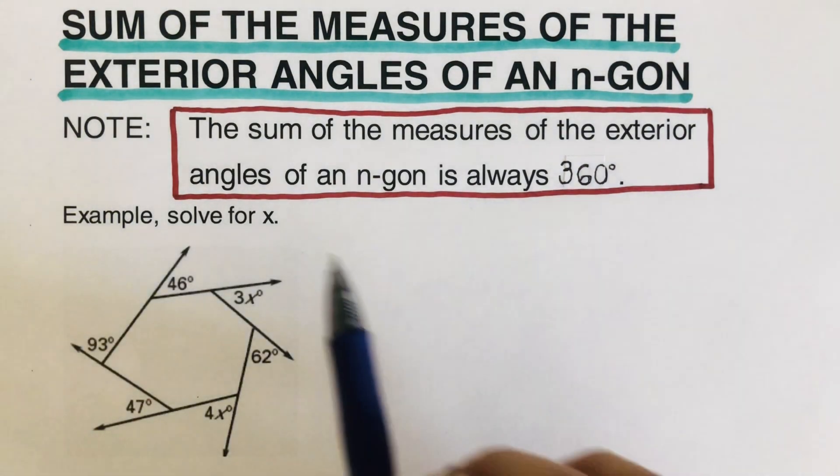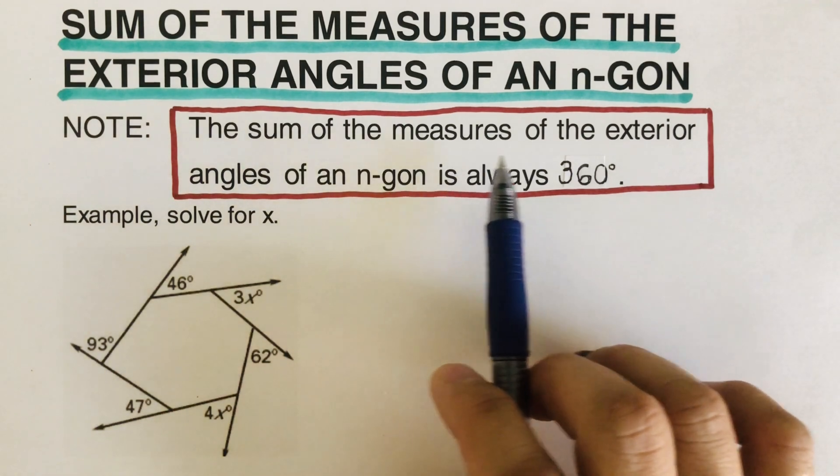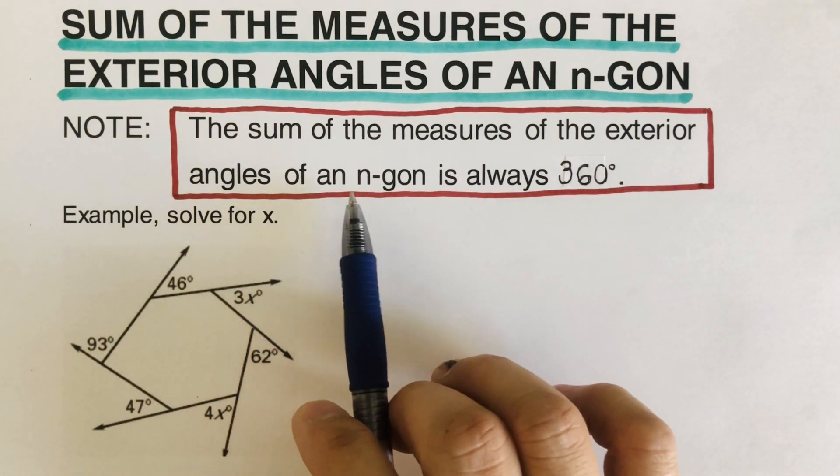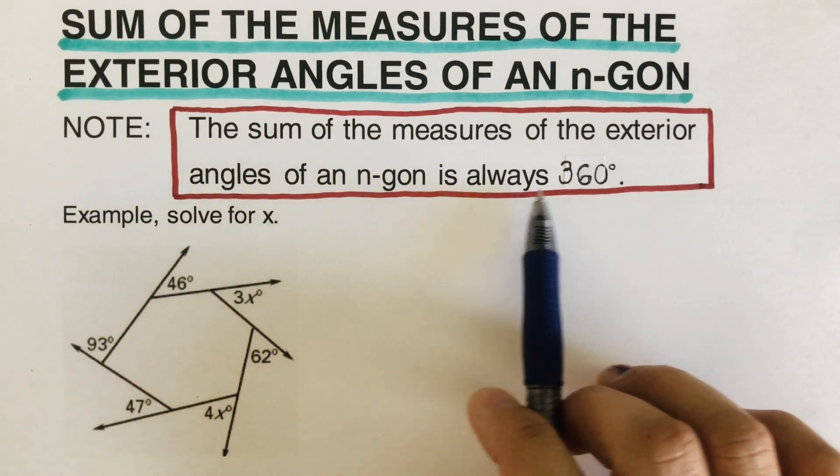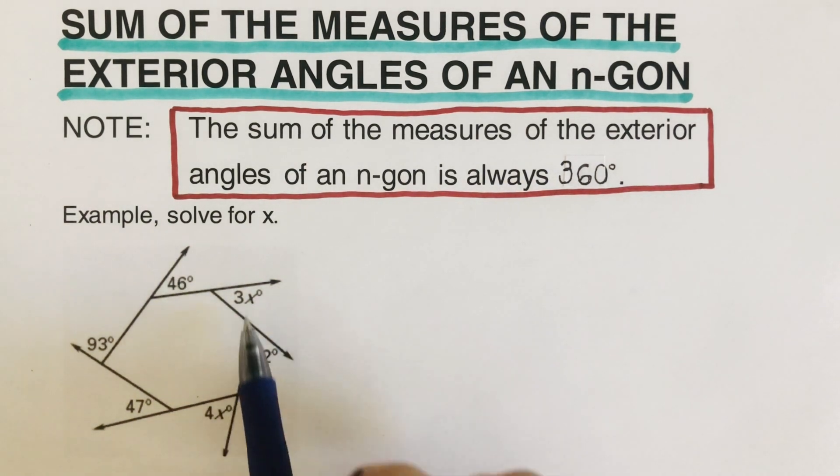I have a note here inside a red box that says the sum of the measures of the exterior angles of any n-gon is always 360°, which means that if we add each of these angles, it's going to be 360.